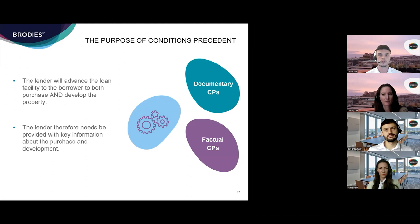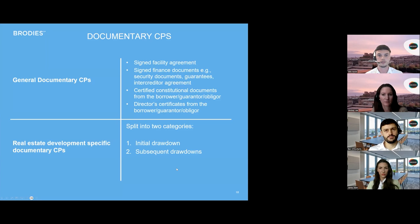The CPs are included in the facility agreement to benefit the lender, providing them with information about the borrower and the transaction so that they can be satisfied on the key issues before releasing funds. In a real estate development finance deal, the lender will advance loan facilities to the borrower to both purchase and develop the property. A standard development finance deal will have multiple drawdowns with CPs that need to be satisfied at the first drawdown and then at subsequent periodic drawdowns. CPs can be split into two categories: documentary and factual.